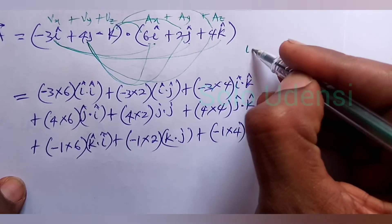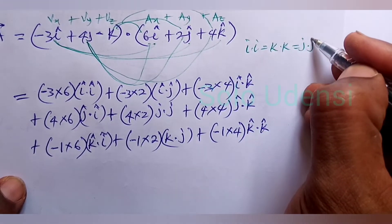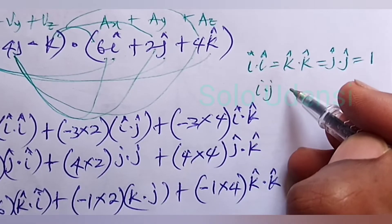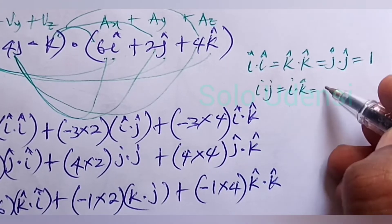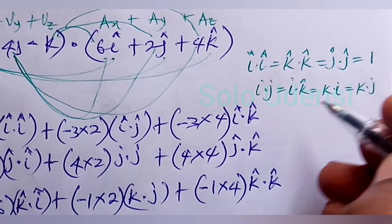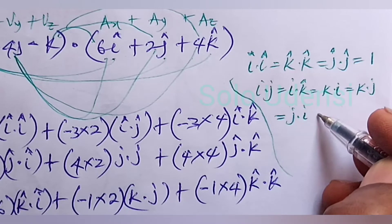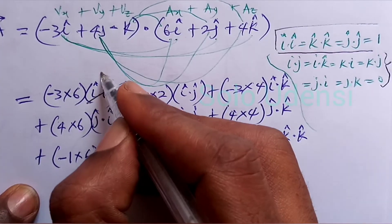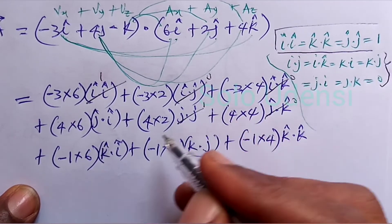Remember that î dot î = ĵ dot ĵ = k̂ dot k̂ = 1. Any cross terms: î dot ĵ = î dot k̂ = k̂ dot î = k̂ dot ĵ = ĵ dot î = ĵ dot k̂ = 0. So: î dot î is 1, î dot ĵ is 0, î dot k̂ is 0, ĵ dot ĵ is 1, ĵ dot k̂ is 0.